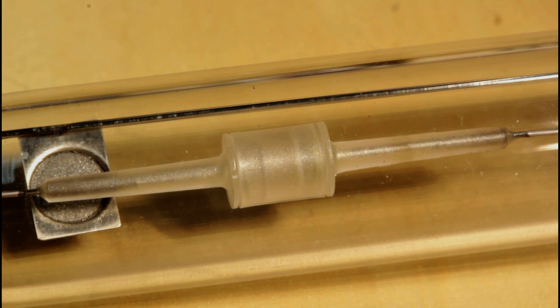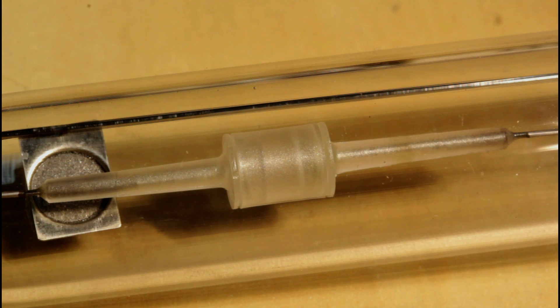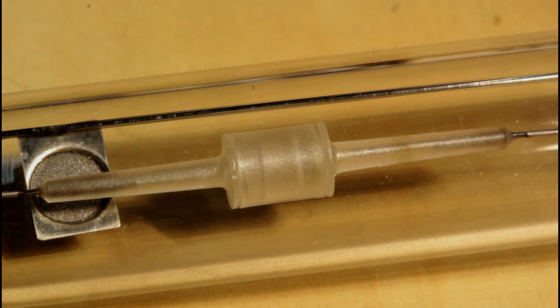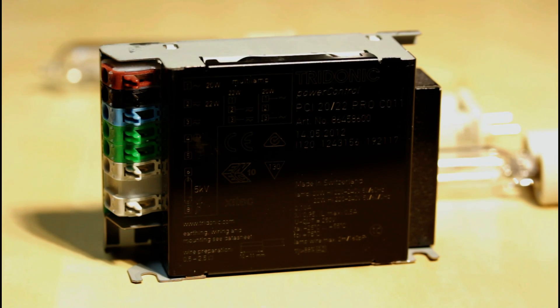Let's have a look at the control gear in the lamp and then we'll fire it up. This is the ballast I'm going to use to run the lamp. It's a Tridonic Power Control PCI 20/22 Pro C011. It's designed to be used on 220 to 240 volts, 50 or 60 hertz.